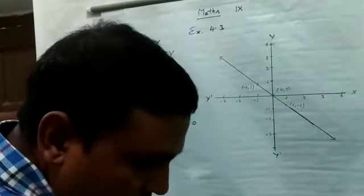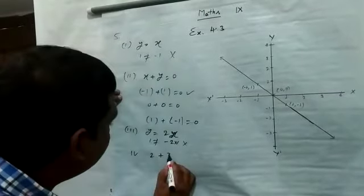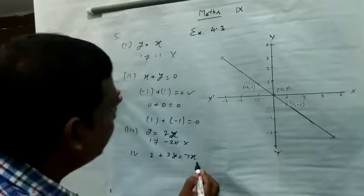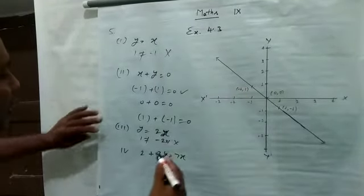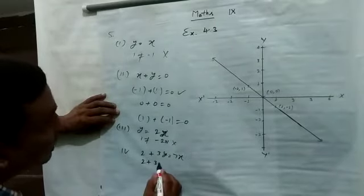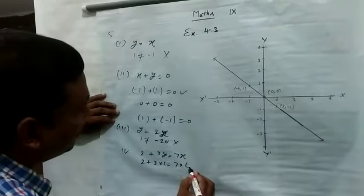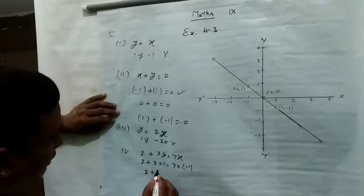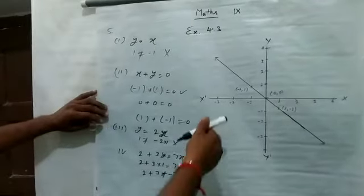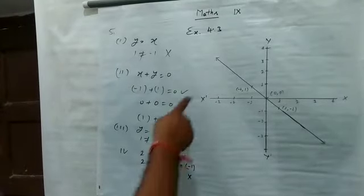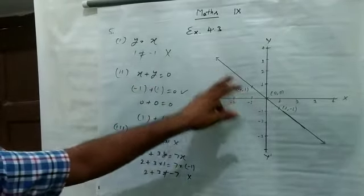Fourth check करेंगे: 2 plus 3y is equal to 7x. y की value 1, x की value minus 1 put करेंगे: 2 plus 3 into 1 is equal to 7 into minus 1, यानी 2 plus 3 is equal to minus 7 — यह नहीं है. इसलिए यह भी नहीं होगा. तो इसका केवल एक ही equation होगा: x plus y is equal to 0. इसी graph का equation होगा.